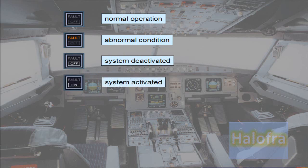White light: if normally the system should be operating and is deactivated, a white off light is illuminated. If normally the system should not be operating and is activated, a white on light is illuminated.